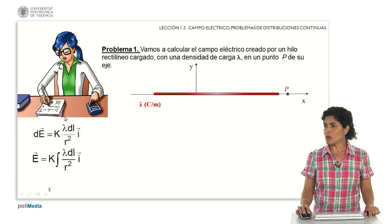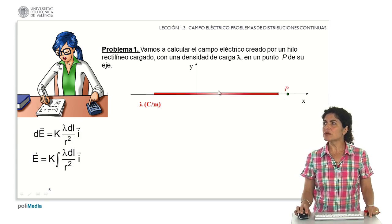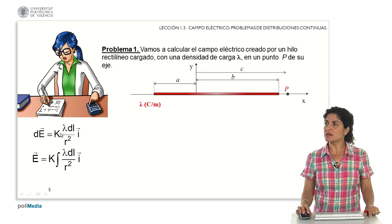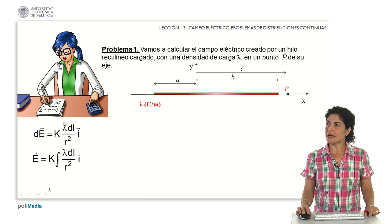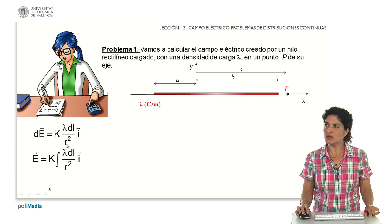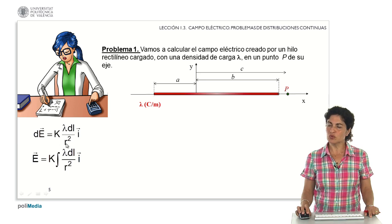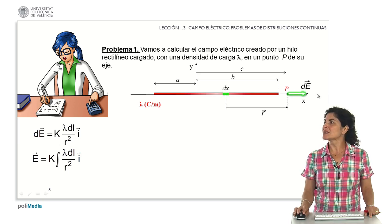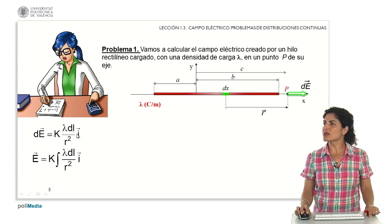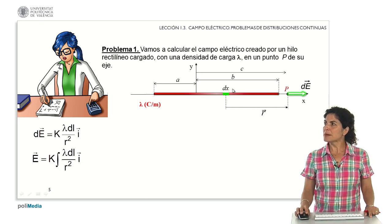What do we have to do? Consider that each small piece of the cable will contribute at this point with a field differential, given by the electrical constant, the longitudinal charge density, the length differential, and the squared distance from that differential to the point of study. The direction is given by the unit vector e. To get the total field contribution, we integrate this expression over the whole distribution.